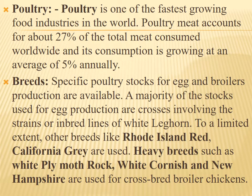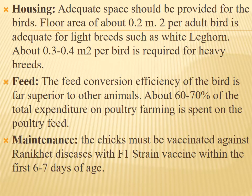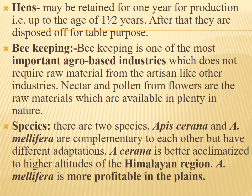For poultry housing, adequate space should be provided for birds. About 0.2 square meters per adult bird is adequate for light breeds such as White Leghorn. About 0.3 to 0.4 square meters per bird is required for heavy breeds. Feed conversion efficiency of birds is far superior to other animals; about 60 to 70 percent of total expenditure on poultry farming is spent on feed. Chicks must be vaccinated against Newcastle disease with the F1 strain vaccine within the first six to seven days. Hens may be retained for one year of production up to age one and a half years, after which they are disposed of.